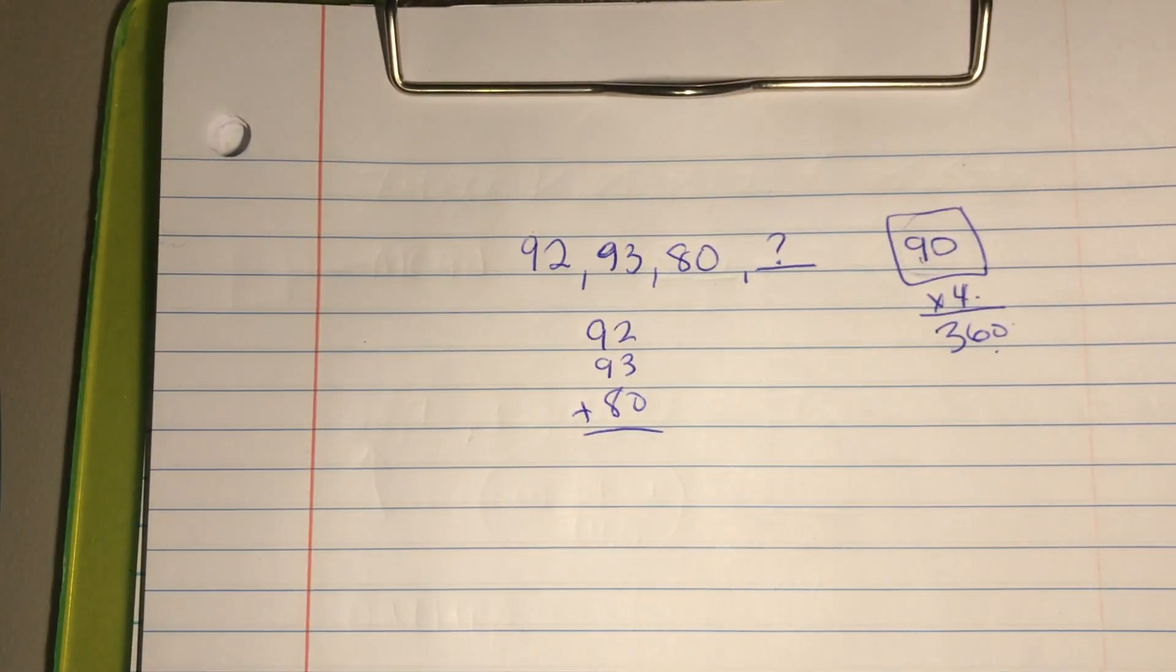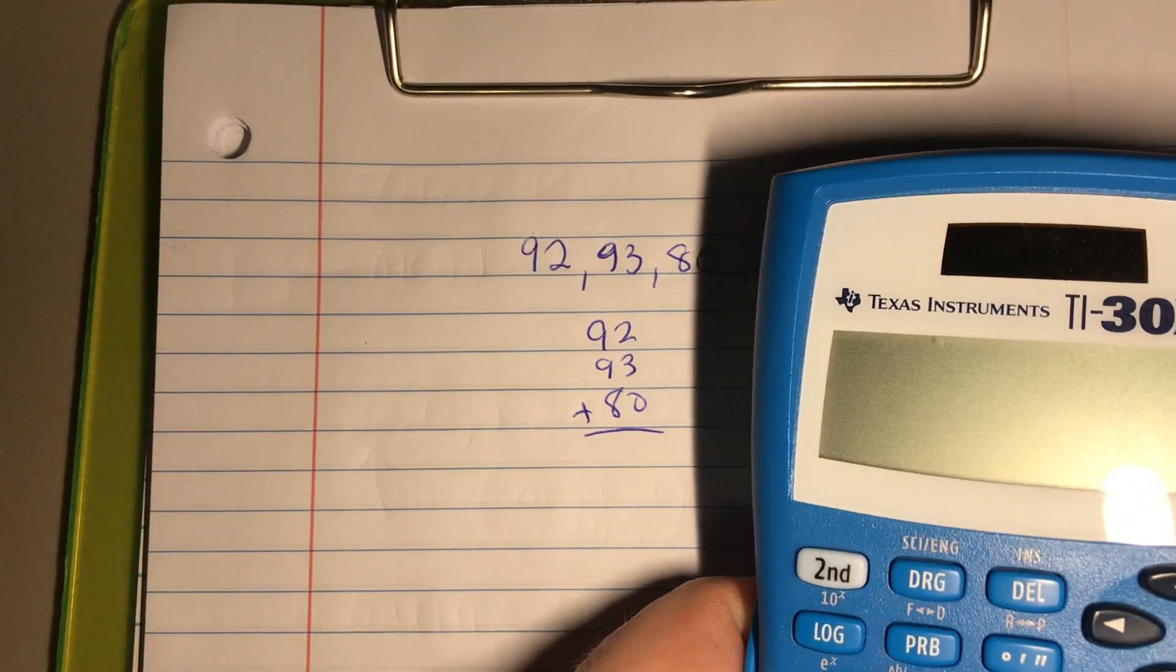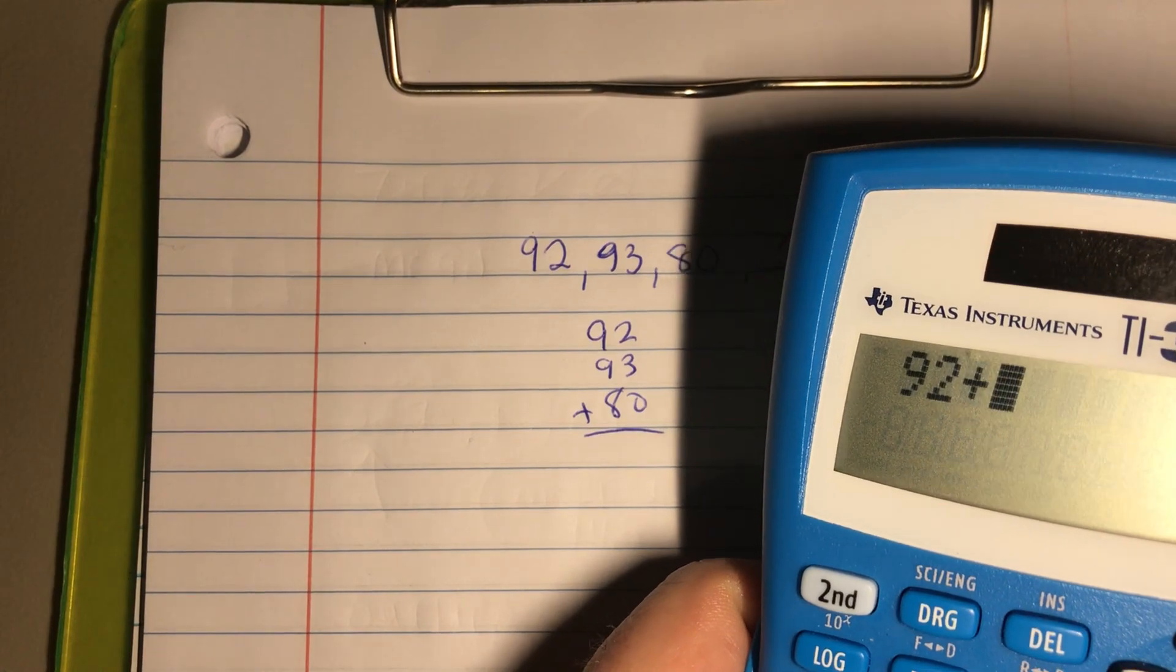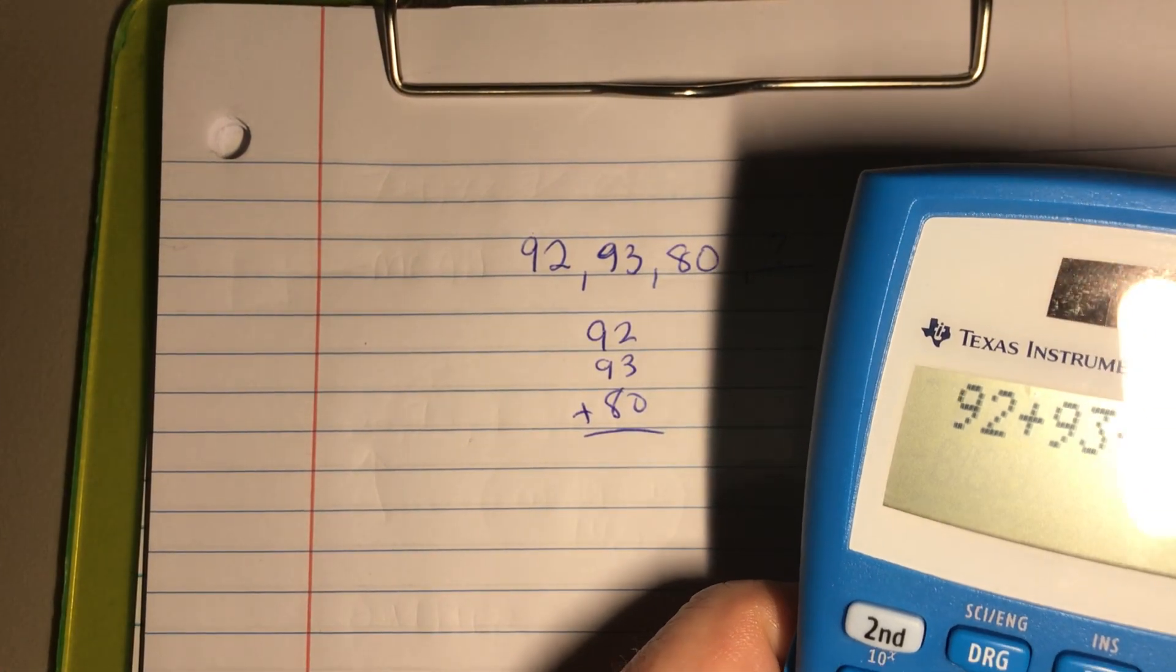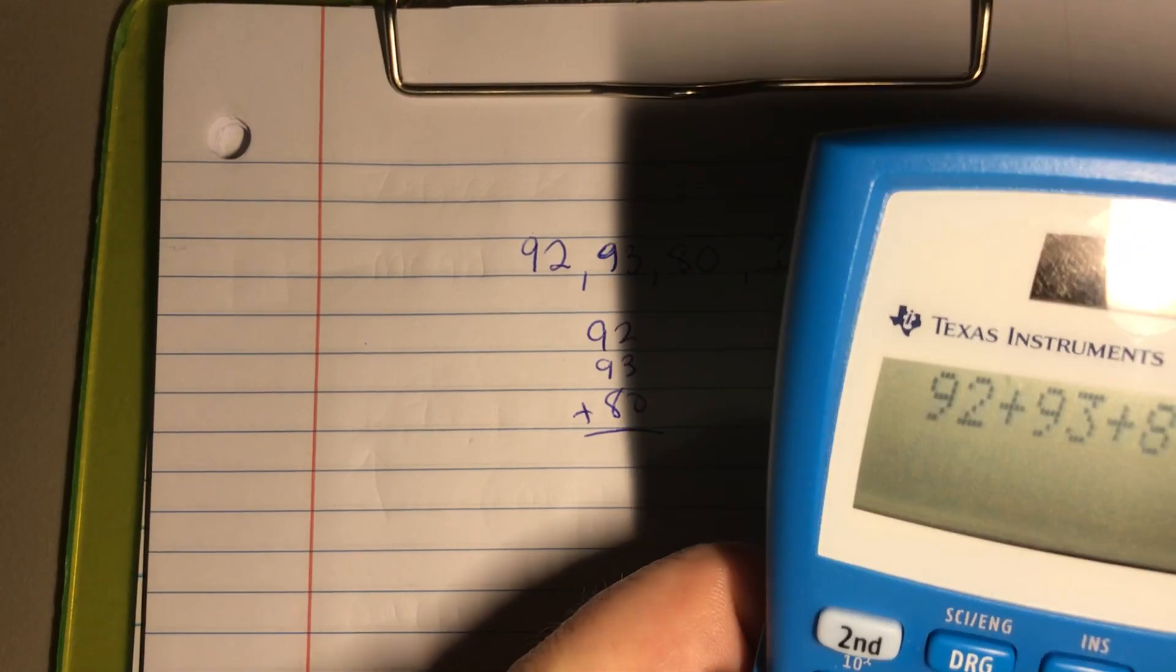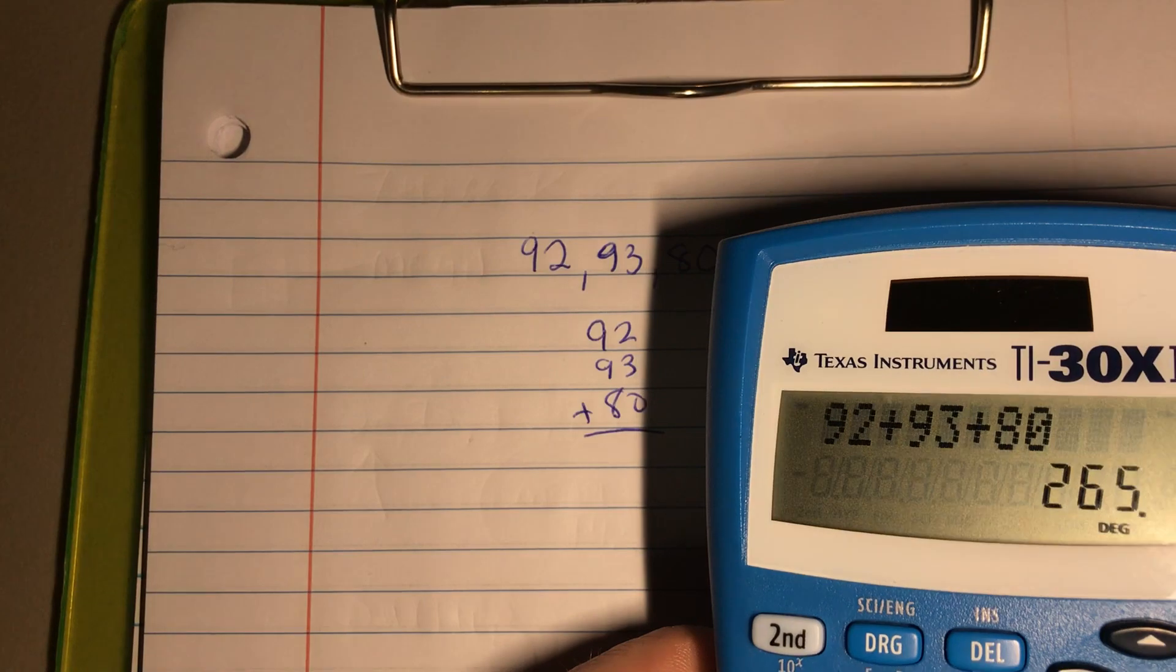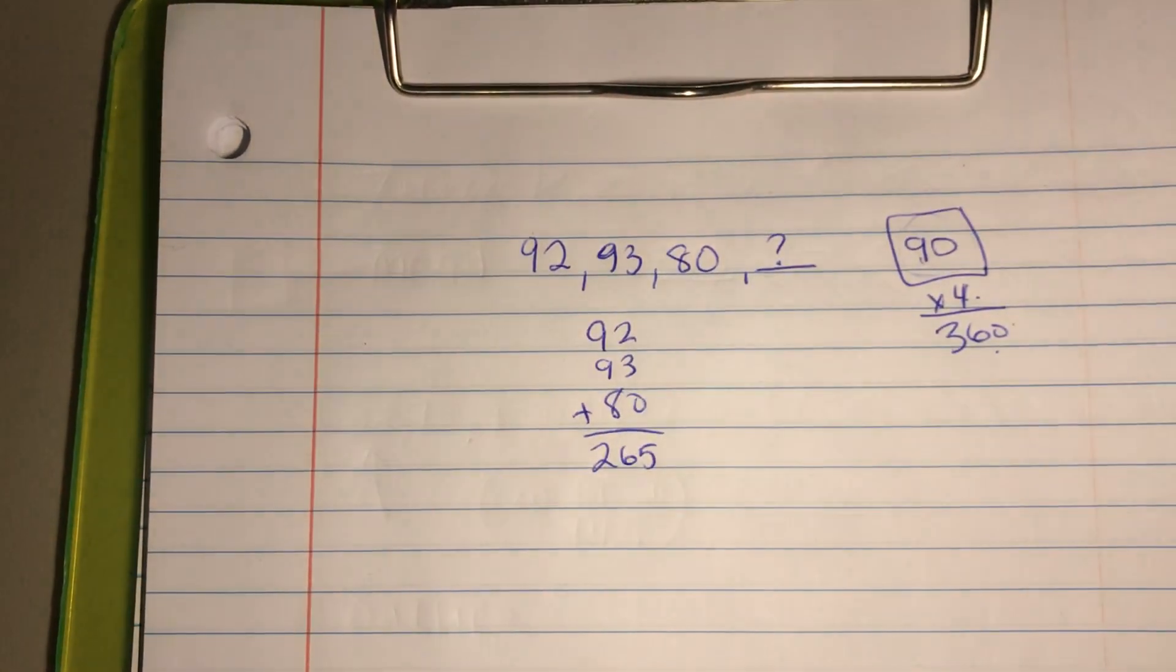Now remember we're working with data and there are going to be a lot bigger numbers than the ones you'll be doing today, so grab that calculator—it's okay. We're gonna take 92, and I know we can do this without a calculator but there's gonna be bigger numbers today. So if you put the numbers in correctly, 92 plus 93 plus 80 equals 265.